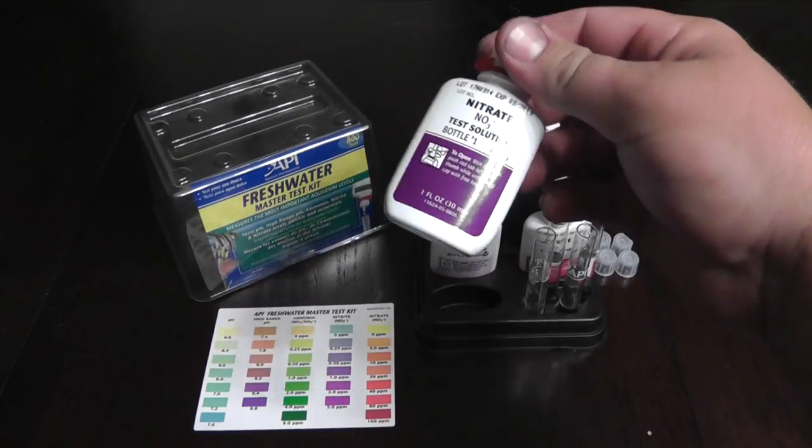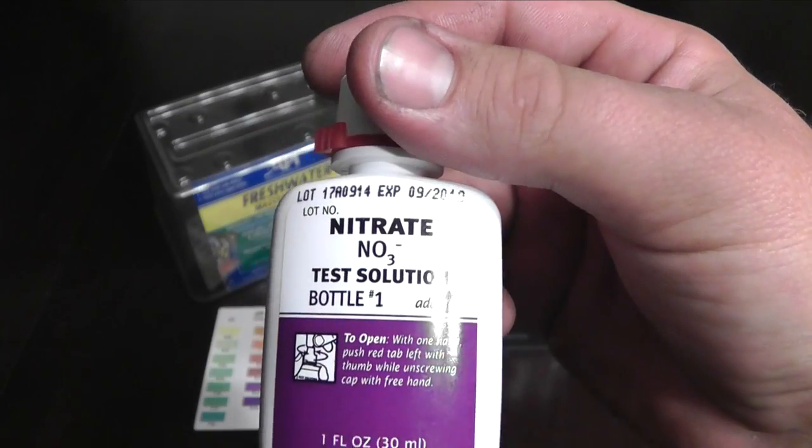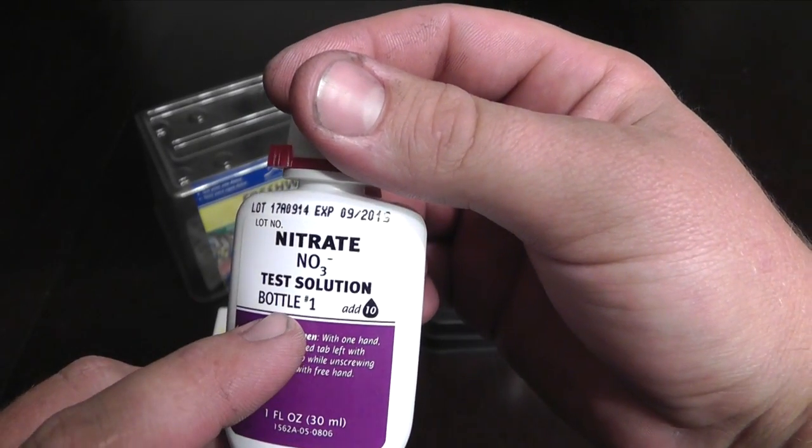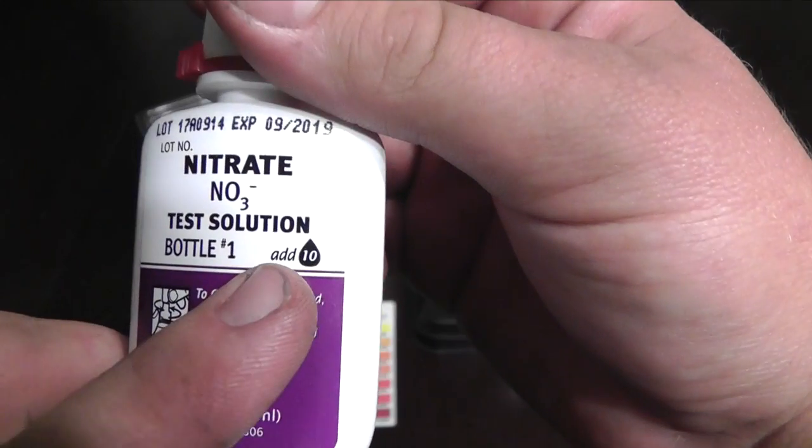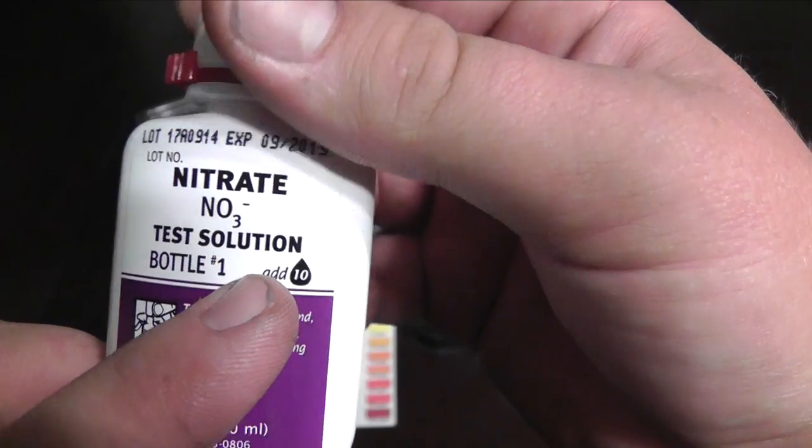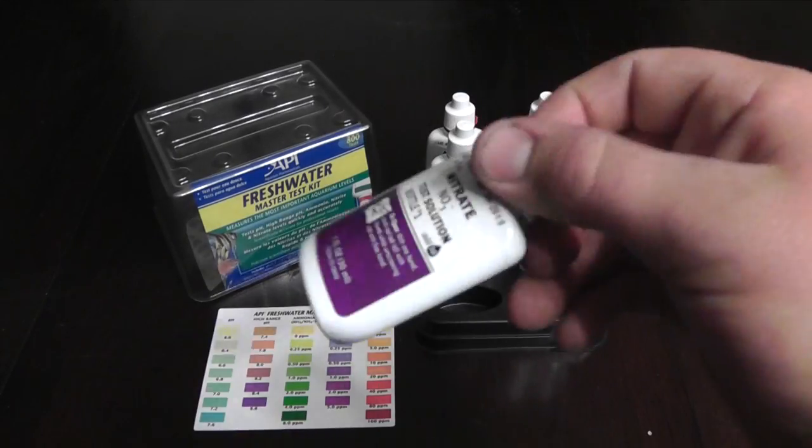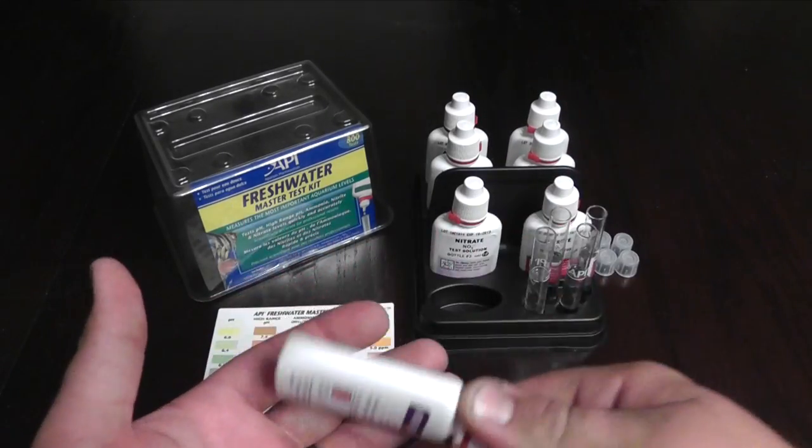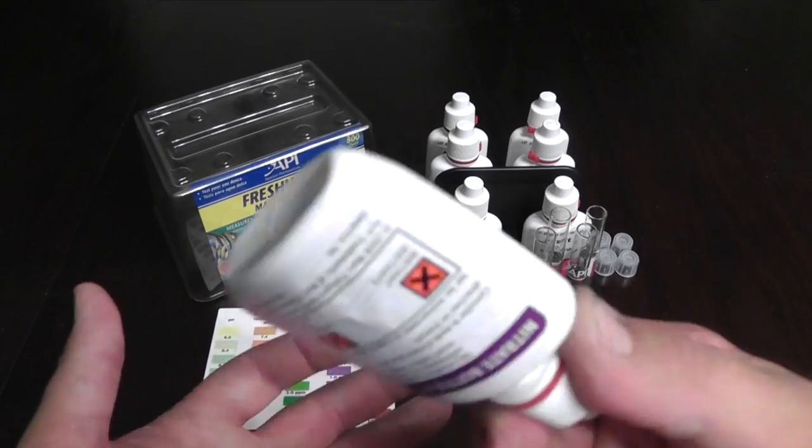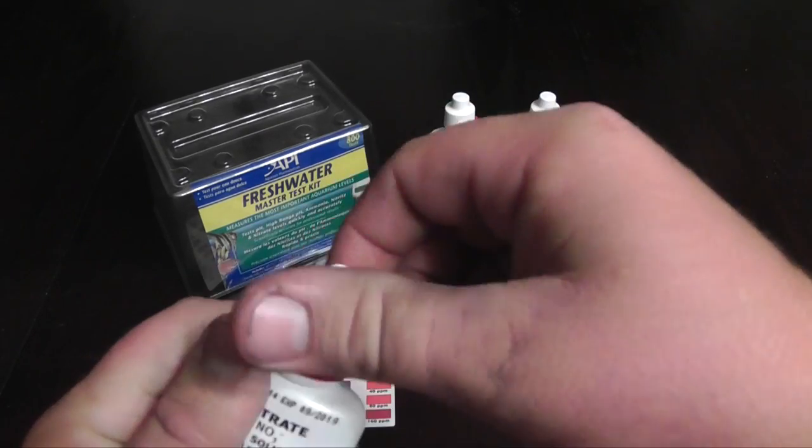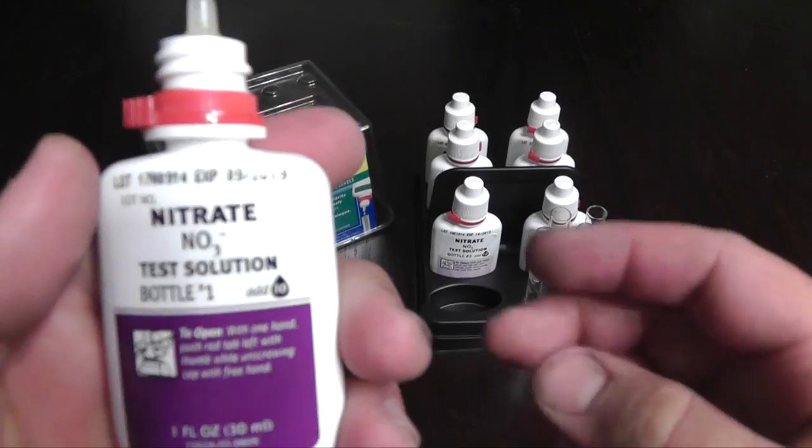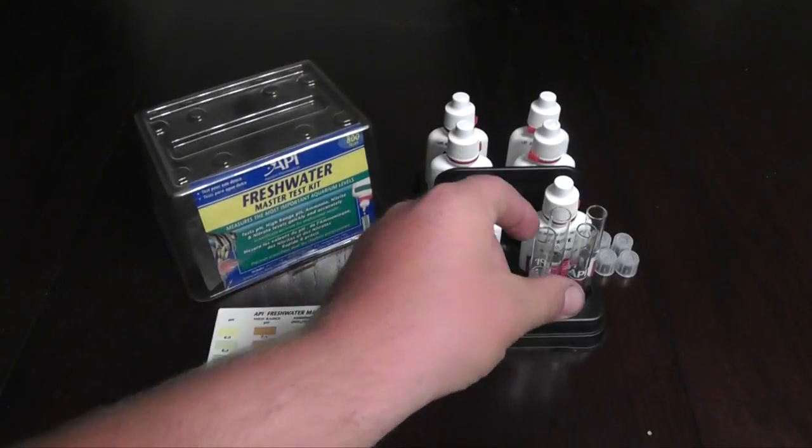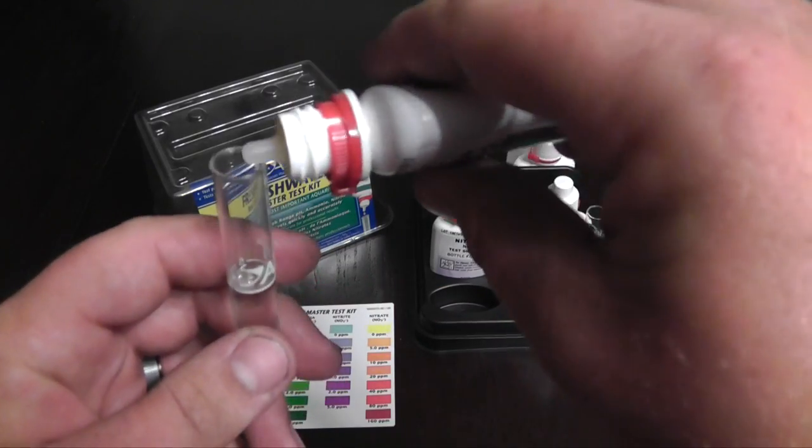Okay guys, first we're going to be testing the nitrates. So you can see right here, this is a nitrate bottle, bottle number one. Start with number one first and I prefer that you shake up these bottles before you actually test the waters because you have to shake up all the pigments and stuff inside of them. So let's do it. Now you're going to add 10 drops to this water as you can see right here.